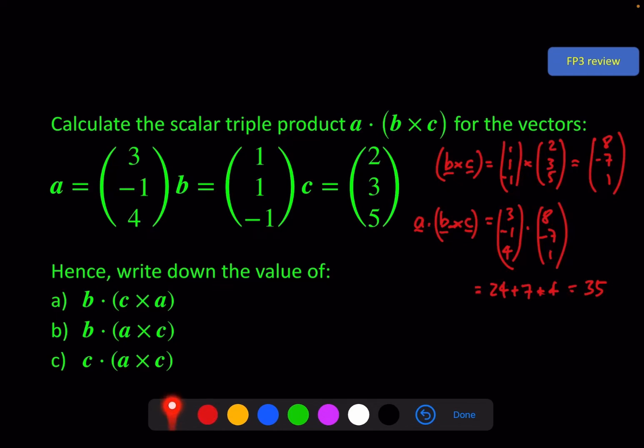Hence write down the value of b · (c × a). Now looking back at the original question this reads abc. In terms of the cyclic process this is the same as this, so the answer will be the same: 35.